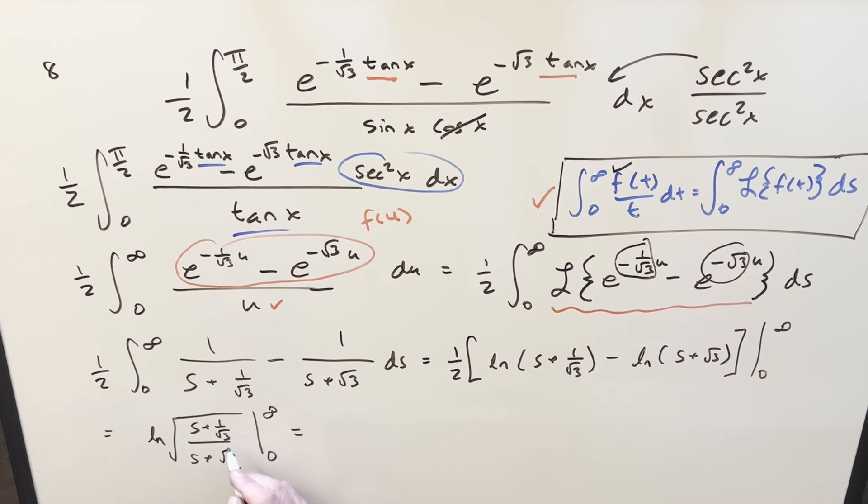First, when you evaluate infinity, these constant values aren't going to matter. So it's just going to be square root of 1. So it's going to be natural log of 1 or just 0 for the first part. Plug in 0. What's going to happen? And we're going to have natural log square root 1 plus square root of 3 divided by square root of 3.